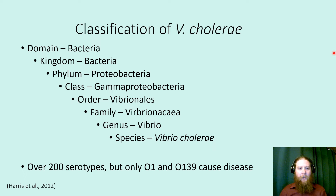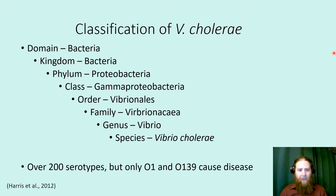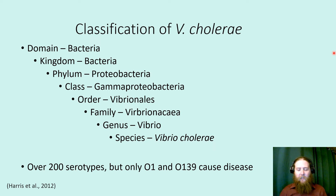There are 200 serotypes — subspecies of Vibrio cholerae — but only two of them cause disease: O1 and O139. Most of the other serotypes don't normally cause cholera, though some can cause mild enteric disease.